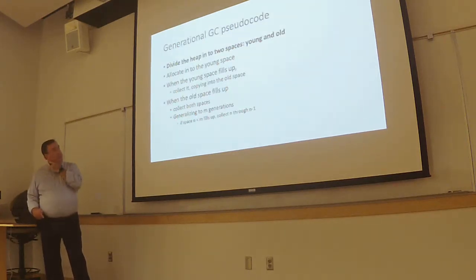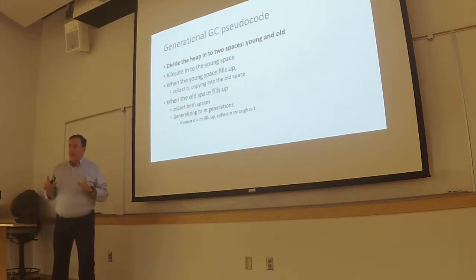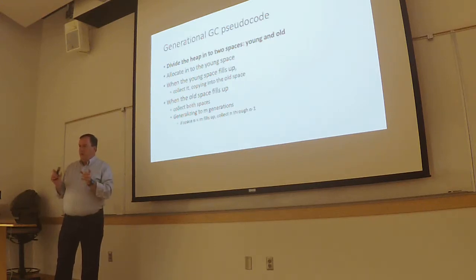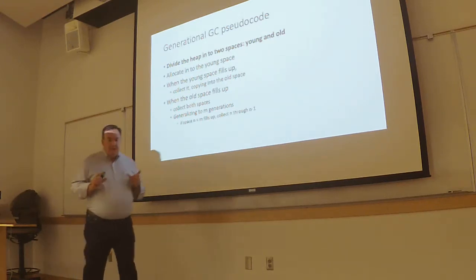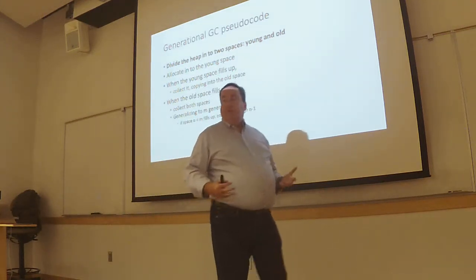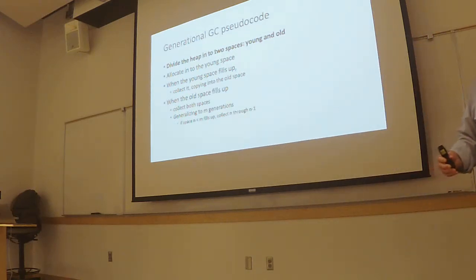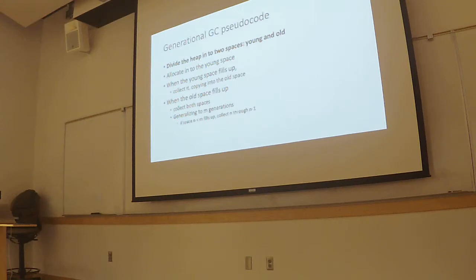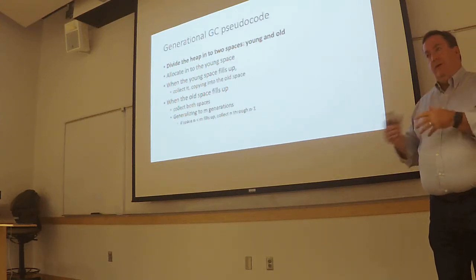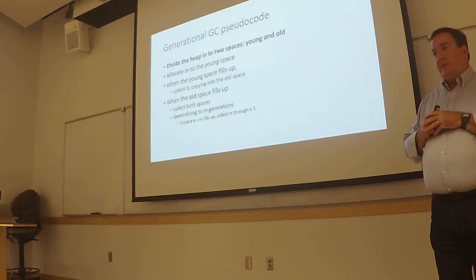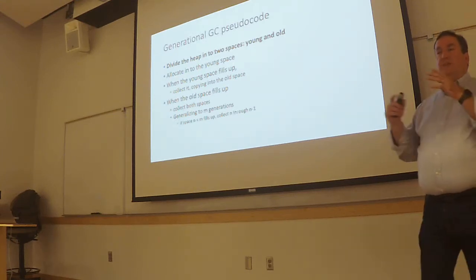So what we're going to do is, in addition to the from-space and the to-space, we're going to actually divide our heap into two sub-heaps — and you can tune the relative sizes. One is where new objects are allocated, so everything new gets allocated in this younger space. After it's survived a while, we eventually move it over. We say: you've been around for a while, I'm getting tired of copying you back and forth — I'm going to move you over to the older object space.